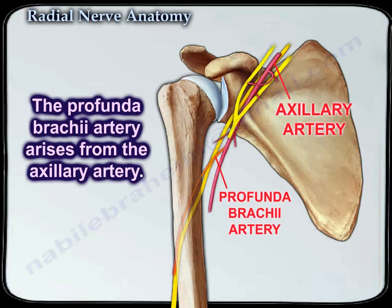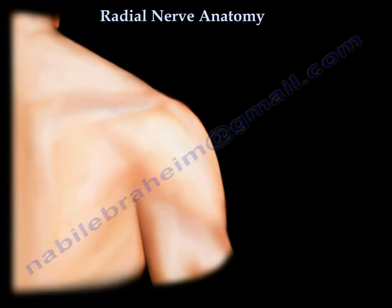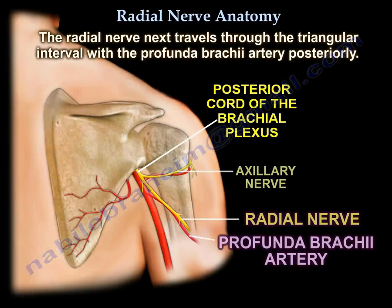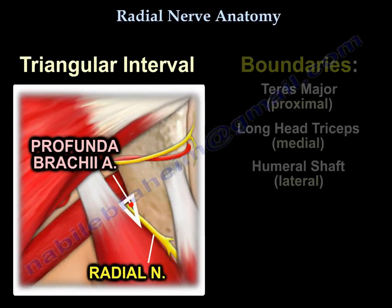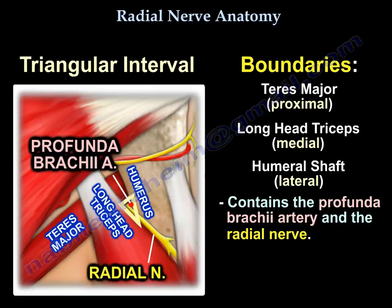The profunda brachial artery arises from the axillary artery. The radial nerve then travels through the triangular interval together with the profunda brachial artery posteriorly. The boundaries of the triangular interval are the teres major proximally, the long head of the triceps medially, and the humeral shaft laterally. The triangular interval contains the profunda brachial artery and the radial nerve.